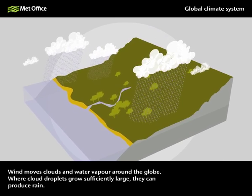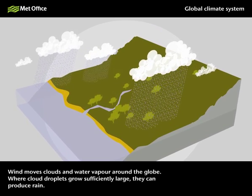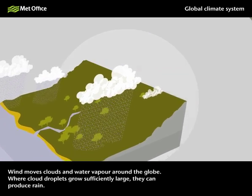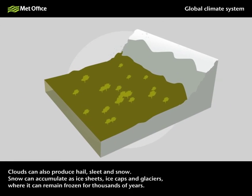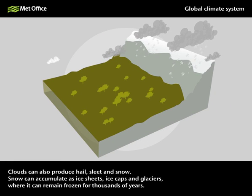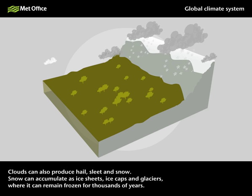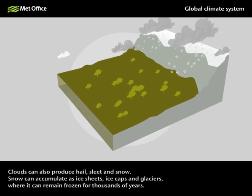Where cloud droplets grow sufficiently large, they can produce rain. Clouds can also produce hail, sleet and snow. Snow can accumulate as ice sheets, ice caps and glaciers, where it can remain frozen for thousands of years.